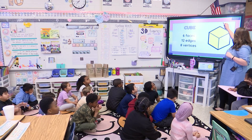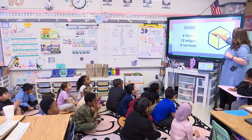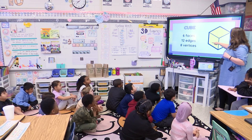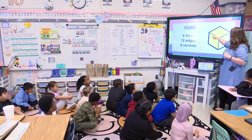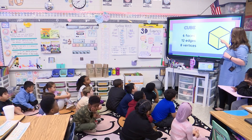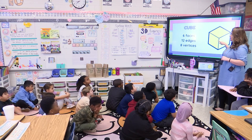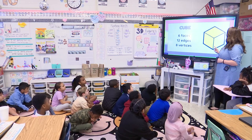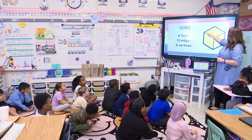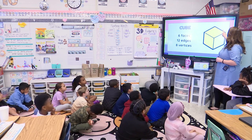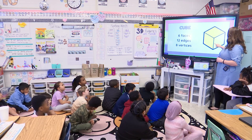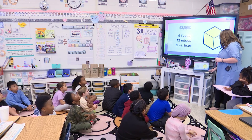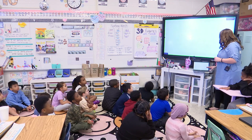Remember, our edges are here. Our faces — what shape is the face on a cube? Square. And then our vertices are your corners. That's the easy way to remember: our vertices are like our corners.